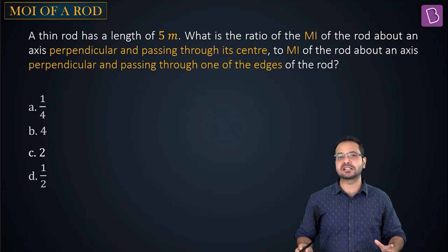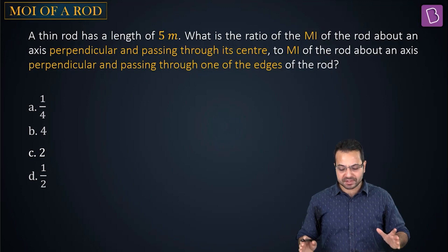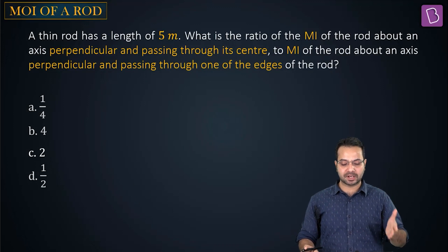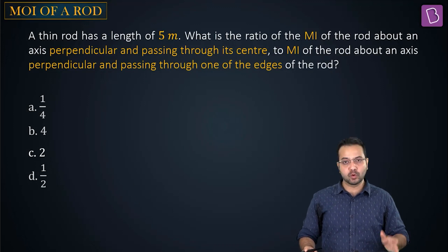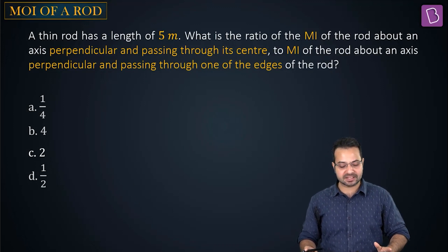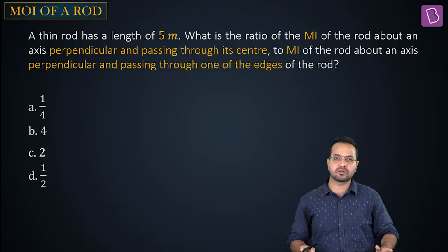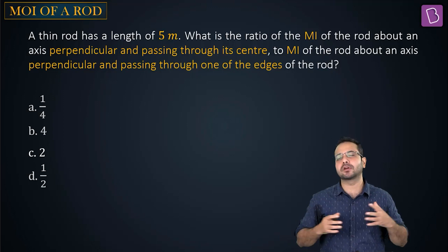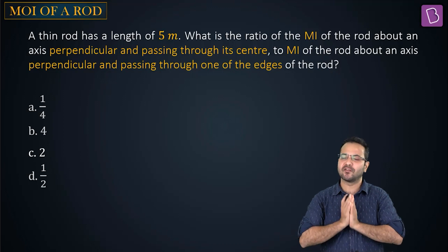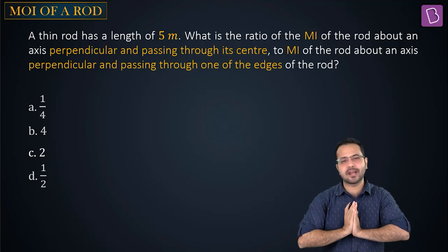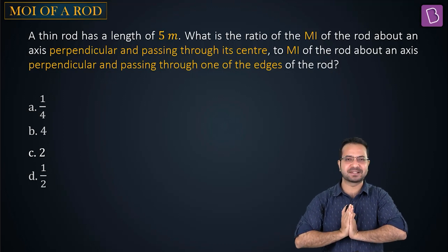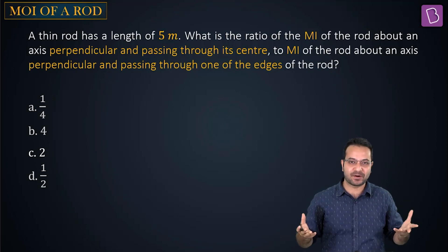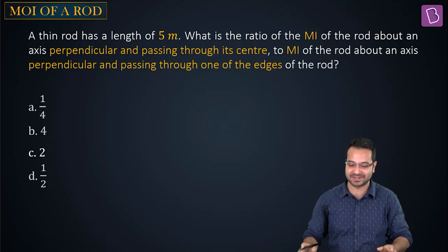A thin rod of length 5 meters — what is the ratio of moment of inertia about an axis perpendicular passing through its center to the moment of inertia about an axis perpendicular passing through one of its ends? This is a very simple question that should take no more than 30 seconds.